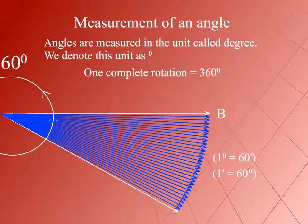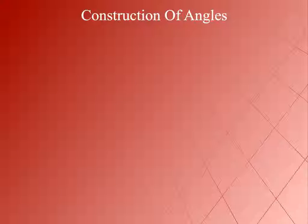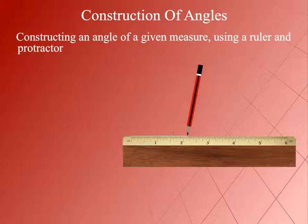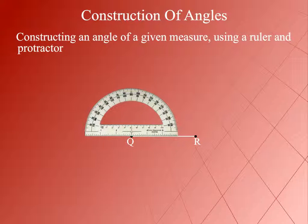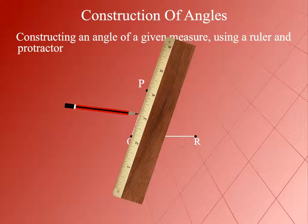Construction of Angles. We draw a ray QR with Q as its endpoint. Then we place the protractor so that the center of the protractor falls exactly at Q and the line of the protractor coincides with the ray QR. We select the inner scale whose 0 degree mark is along QR, and mark point P on the paper against the 70 degree mark of the selected scale.